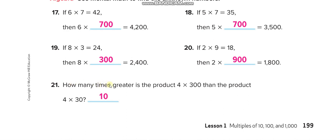How many times greater is the product of 4 times 300 than the product of 4 times 30? There is one extra zero, so it is ten times greater. Since 4 times 3 is 12, the first product is 1,200 and the second is 120. Because 120 times 10 equals 1,200, the answer is ten times greater.